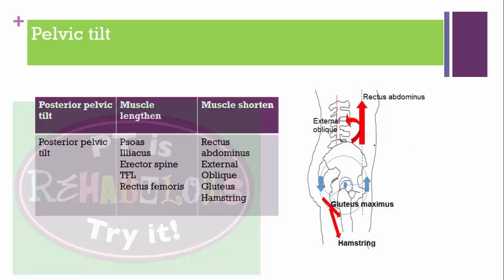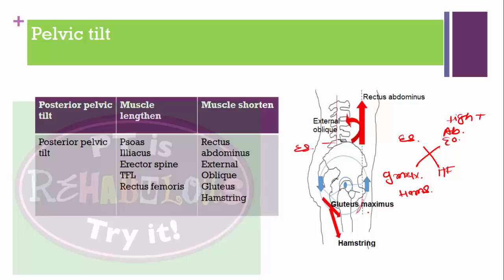In posterior pelvic tilt, the tight muscles are rectus abdominis, external obliques, gluteus maximus, and hamstrings. The weak muscles are erector spinae and hip flexors. Because the hip flexors are weak, they cannot stabilize the hip, and the tight hip extensors pull the pelvis posteriorly, causing posterior pelvic tilt.